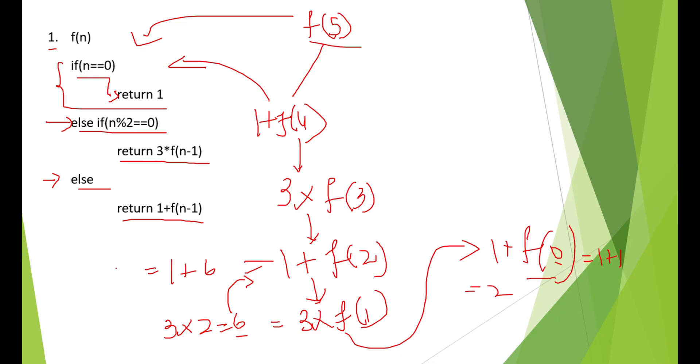This will be 7. The value of f of 3 will be 1 plus f of 2, which is nothing but 7. Then again this will go back here. This is nothing but 3 into 7, the previous value which we got here. Just substitute it in the up function. We will get 3 into 7 is nothing but 21.